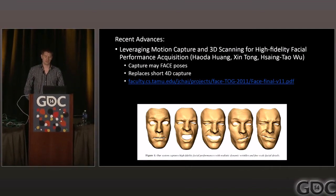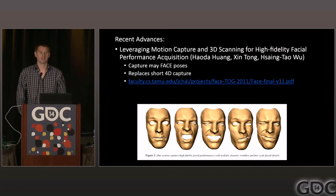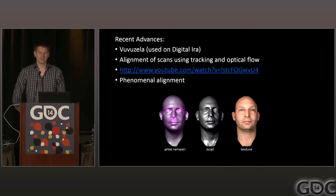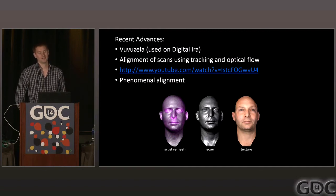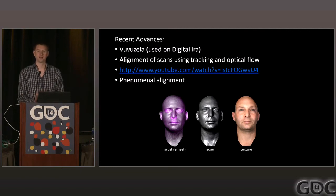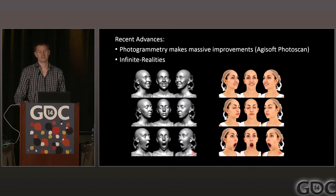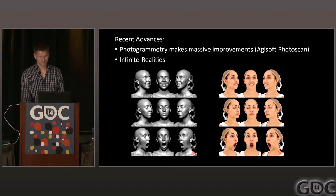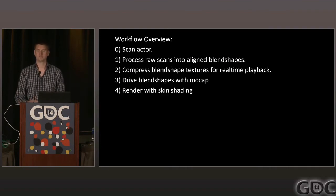Another cool paper did a bunch of raw scans of a face, aligned them mostly automatically, and drove it using standard motion capture data. You've also probably seen the Digital IRA project by ICT — if not, please Google it. They use the same process: a few high-quality scans driven with data. Also, Agisoft PhotoScan is really kicking ass right now — it's cheap and produces incredible quality scans using standard SLRs, like these really great scans from Infinite Realities.